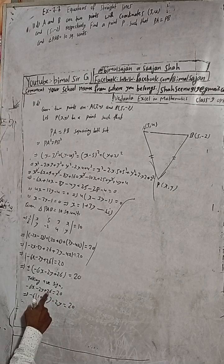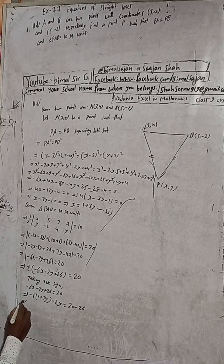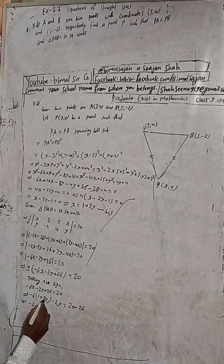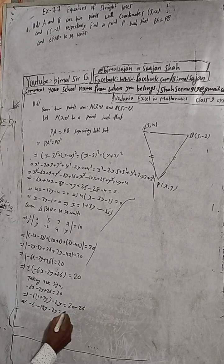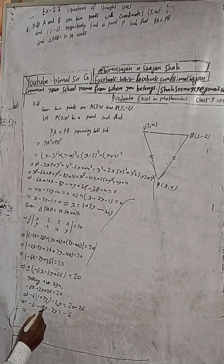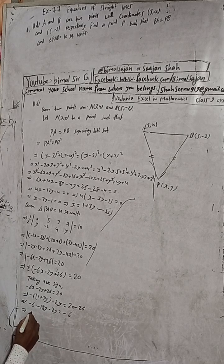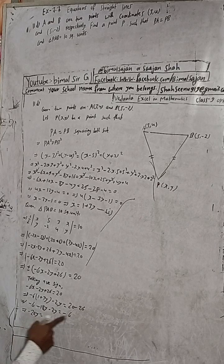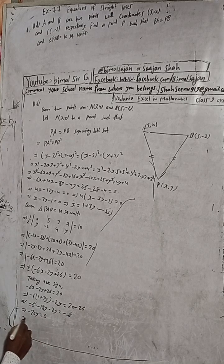We have 20 and plus 26, minus 26. So 6x minus 6x plus minus, minus plus minus, and 6x plus 18y. And minus 2y is equal to minus 6. Minus 6, plus 6 cancel, which is 0.